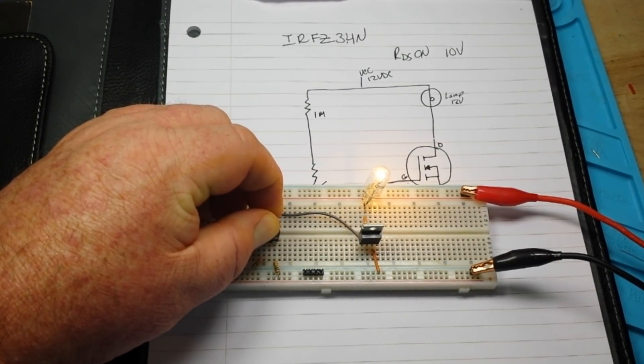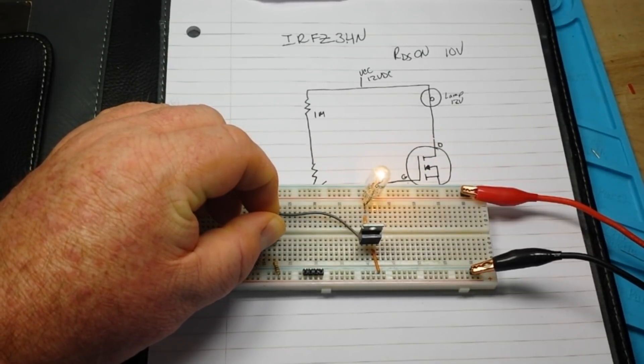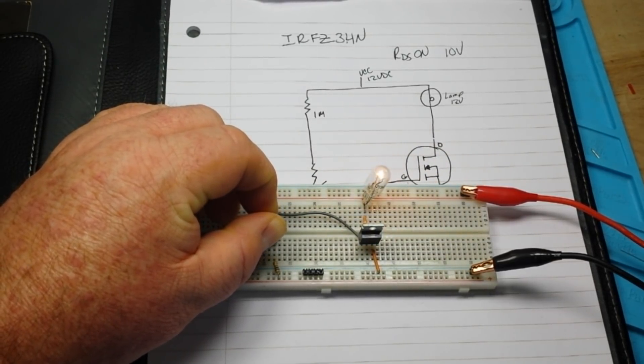We get some nice power. And then we can turn it back down. And our light dims.